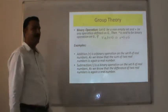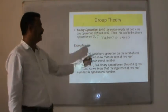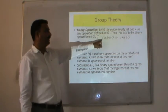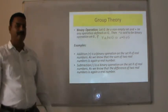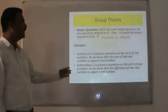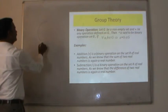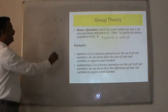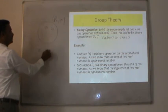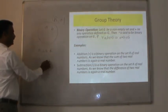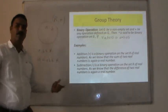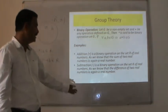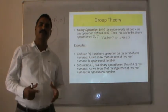Now, the definition of binary operation: let G be any non-empty set and * be an operation defined on G. Then * is said to be a binary operation if for every two members a and b belonging to G, it implies a * b is again a member of G. For example, consider the set of real numbers R with binary operation addition. If any two members a and b belong to R, then a + b is again a member of R, showing addition is a binary operation over R. Similarly, subtraction is also a binary operation on R, because the difference of two real numbers is again a real number.